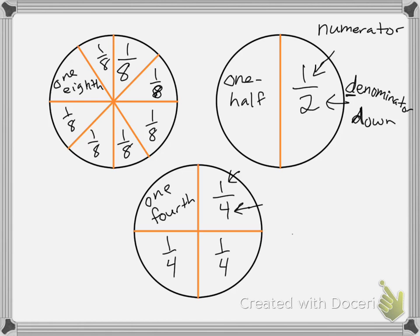All right, so which piece do you think is the biggest piece? Well, you can tell that half, one half, is much bigger than one fourth or one eighth. So one half is going to be the biggest number. What number is the smallest? You can see that one eighth is the smallest size.